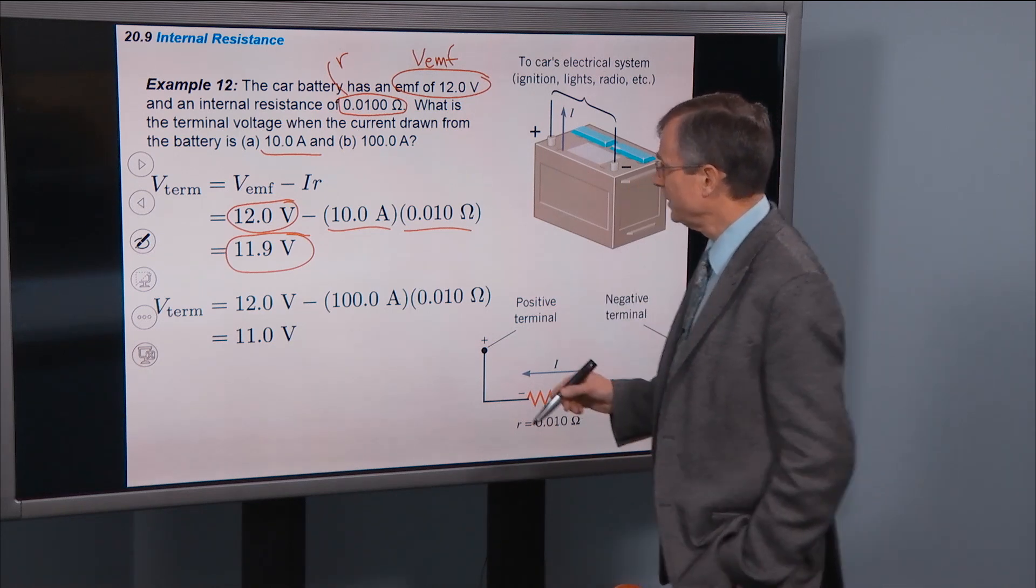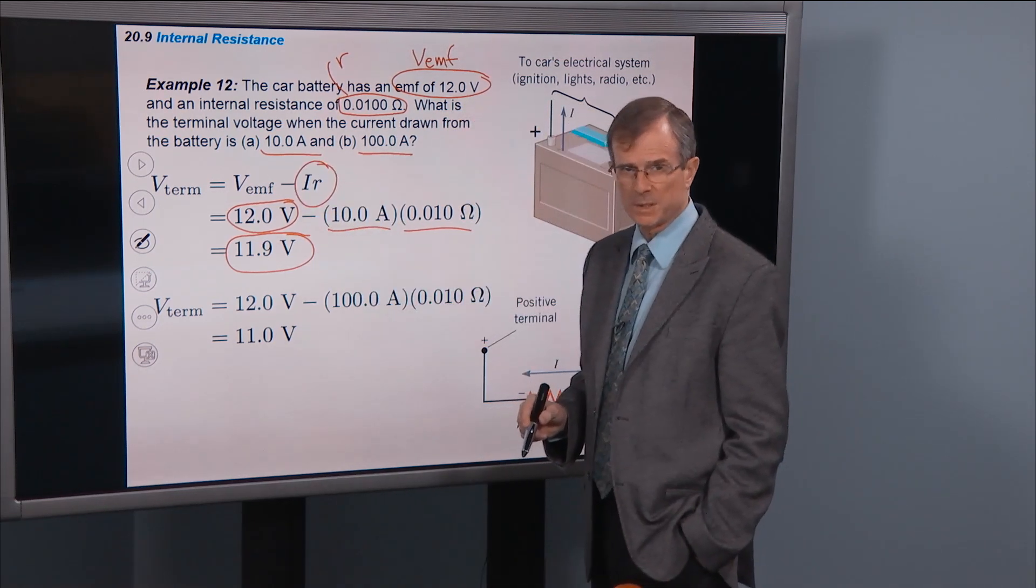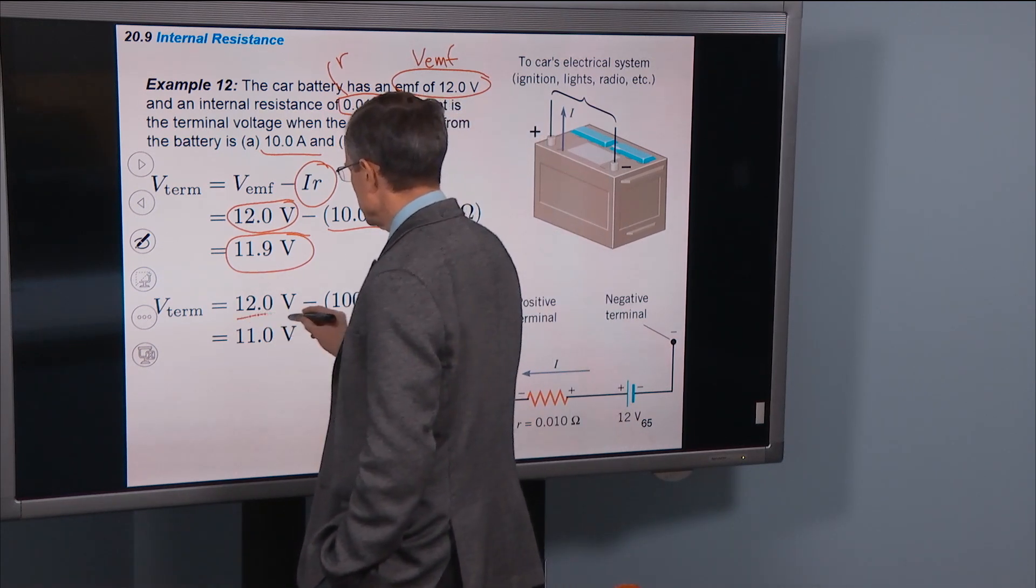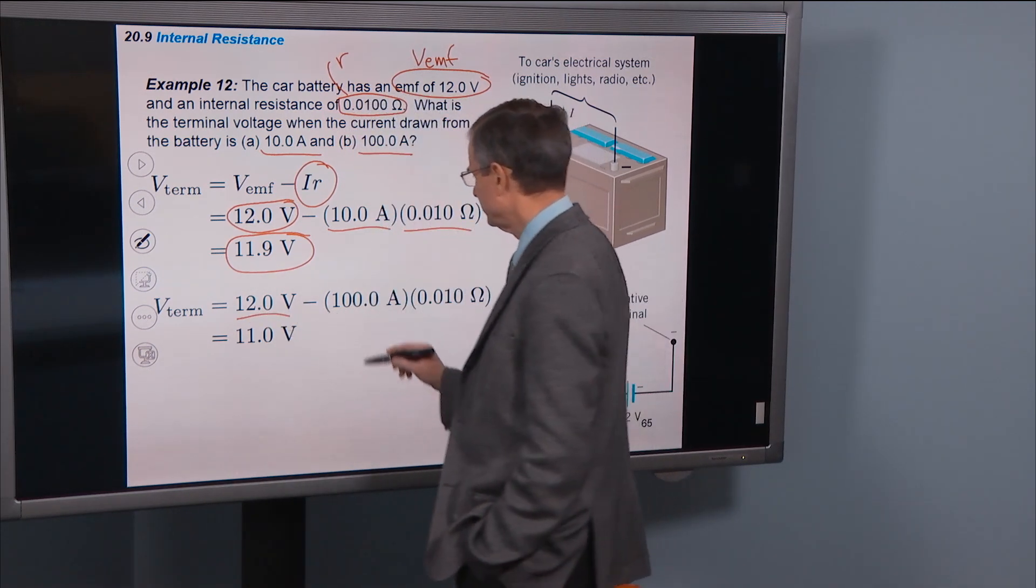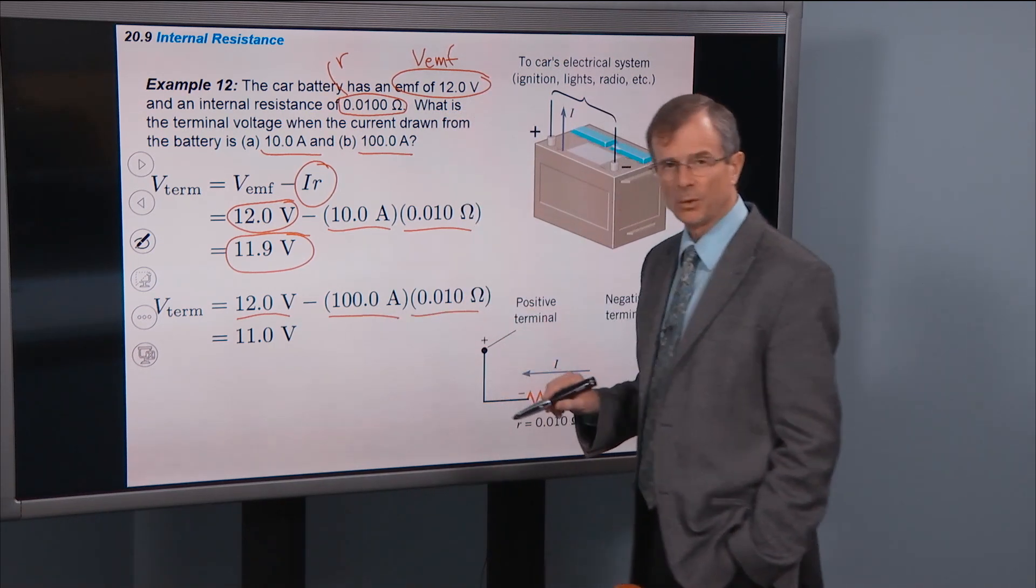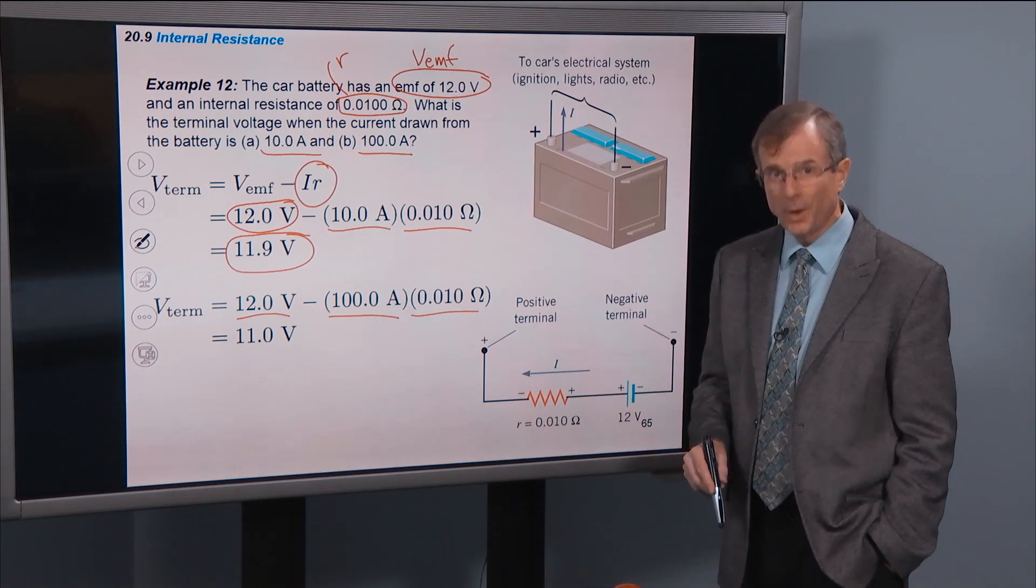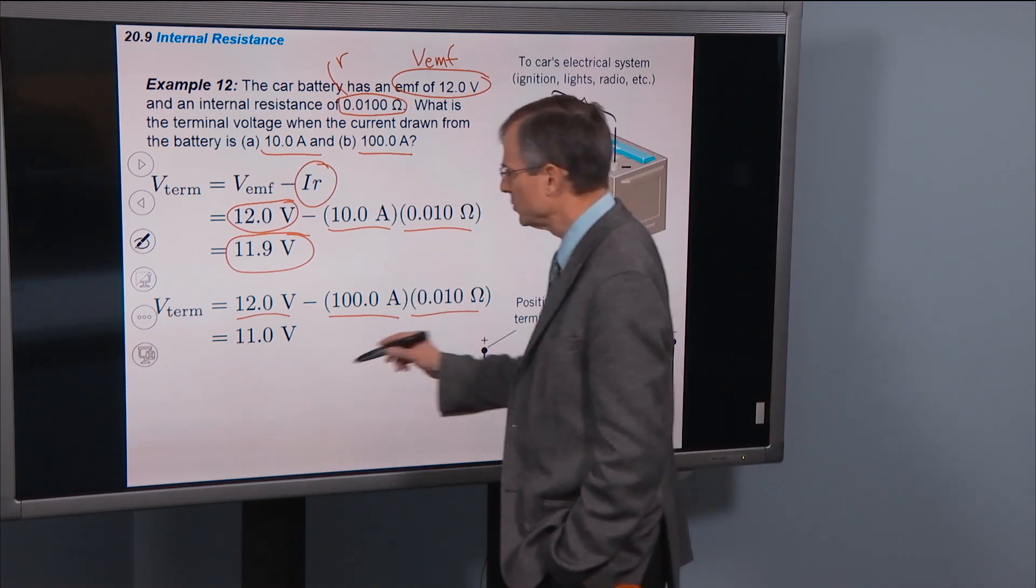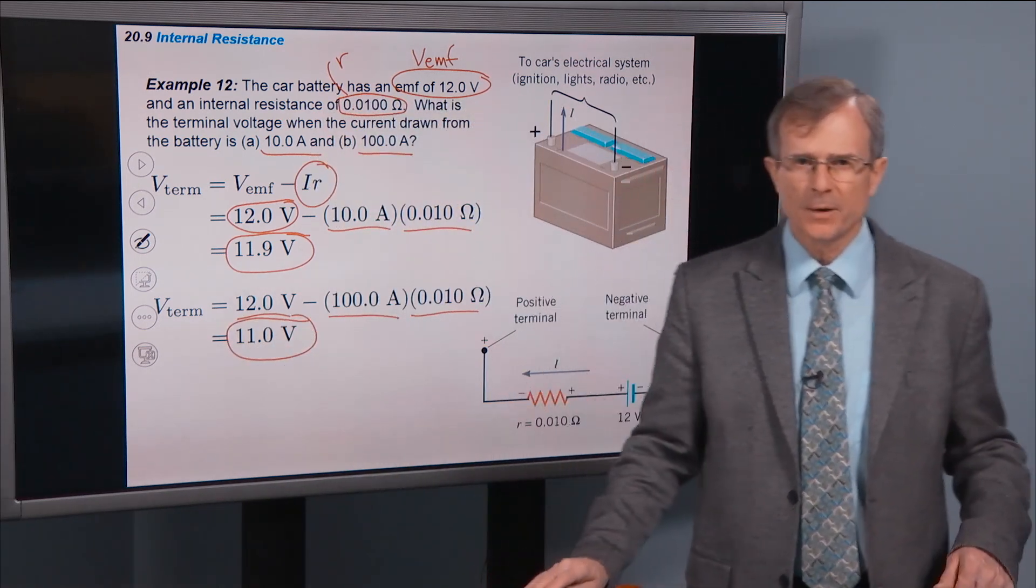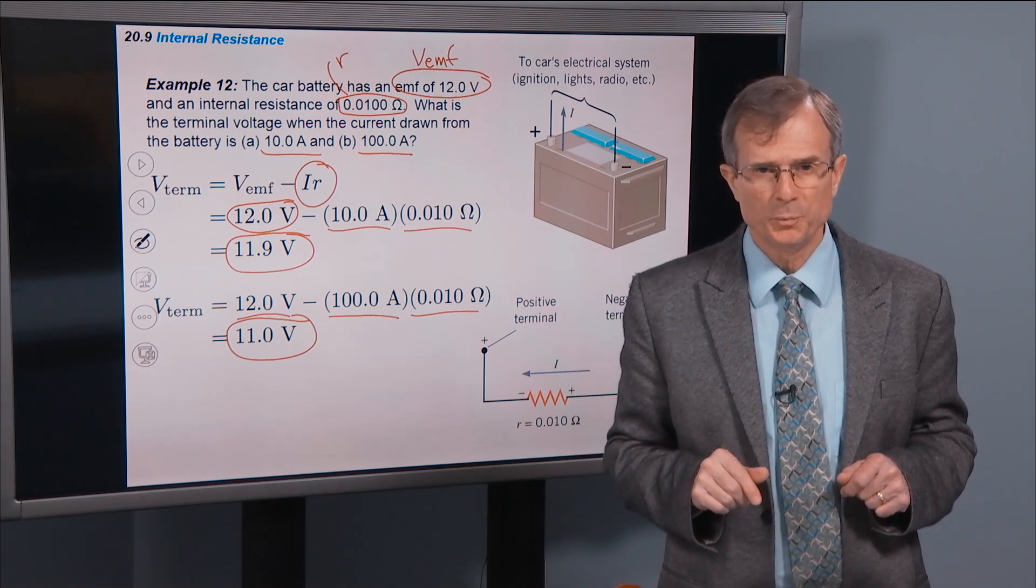Now what if you have a current of 100 amps? Well then this term becomes more important. And the terminal voltage is even less than the EMF. So here's 12 volts, the EMF. This is the current of 100 amps times the internal resistance of 0.01. Well 0.01 times 100 is our old friend 1. And 12 minus 1 is 11. So the more current you put through a battery, the lower the terminal voltage will be.